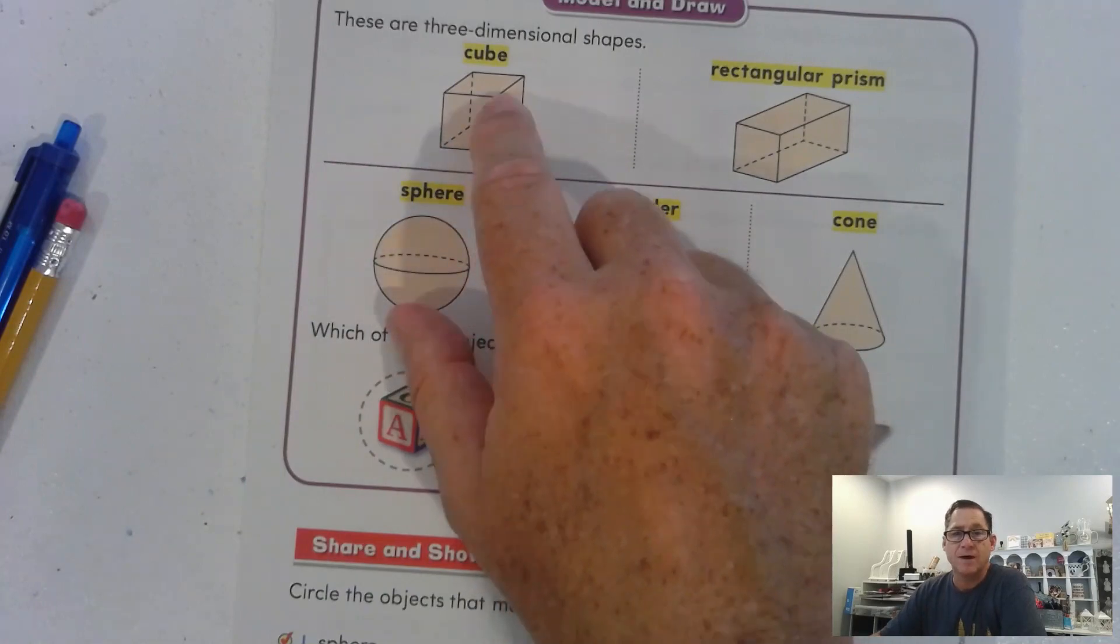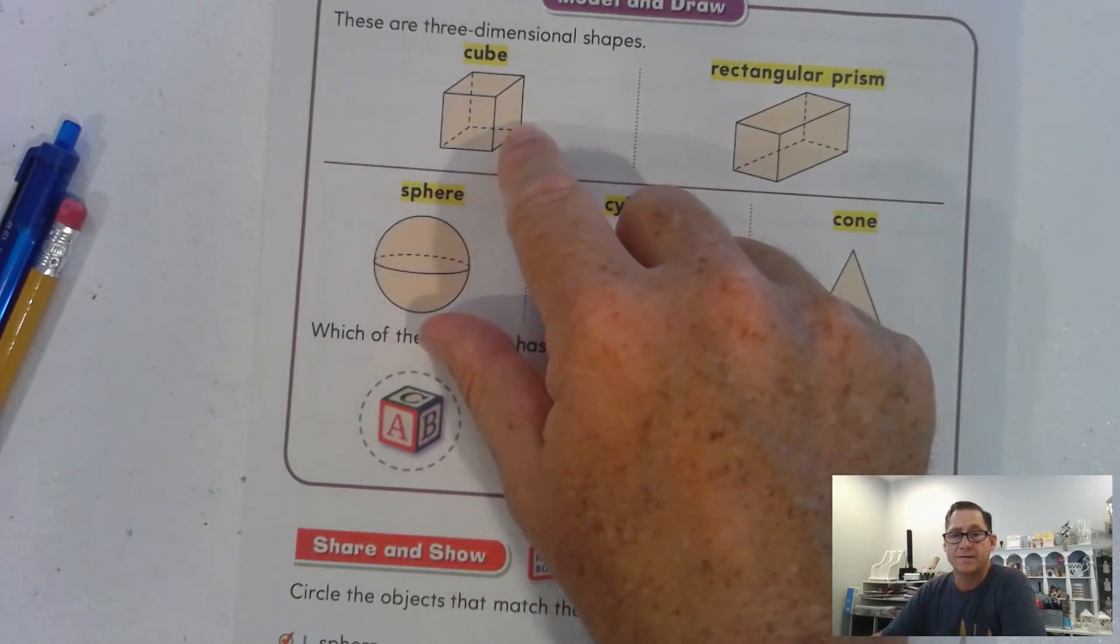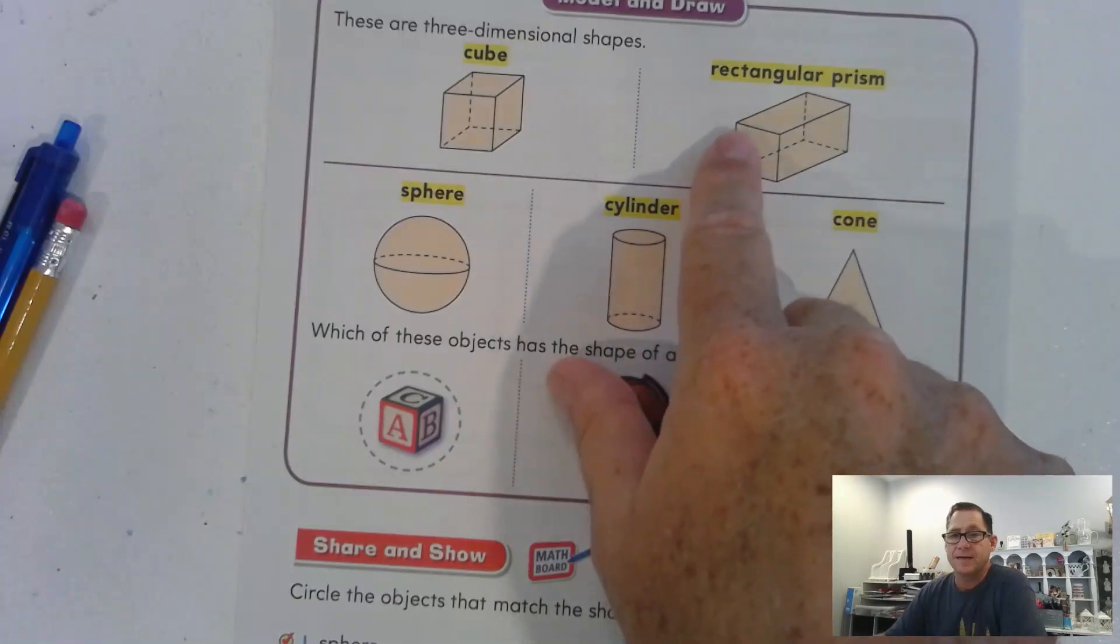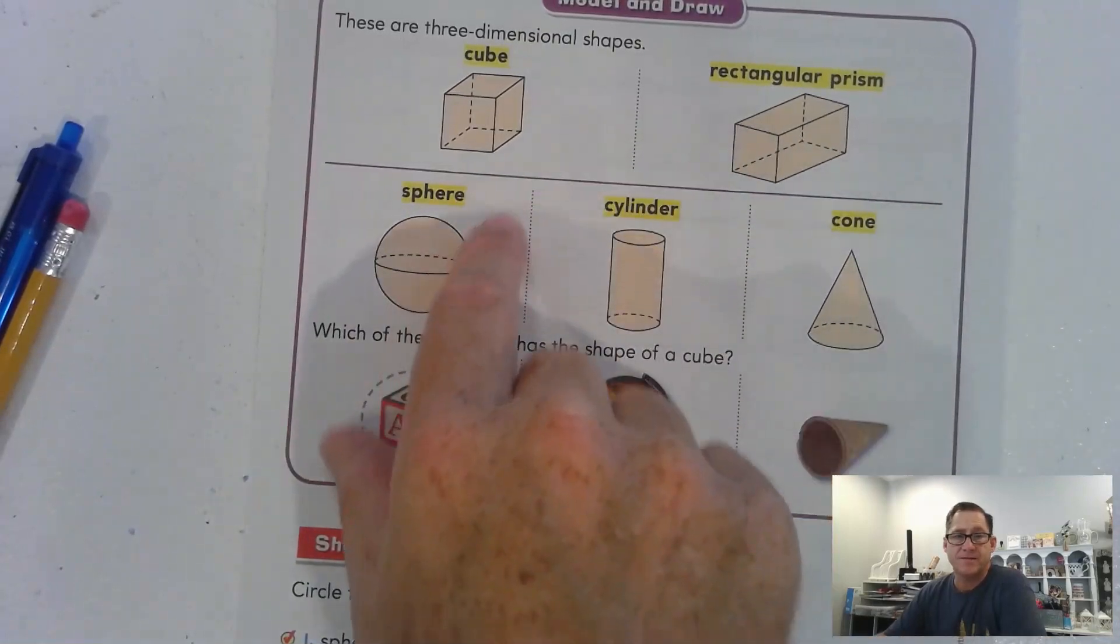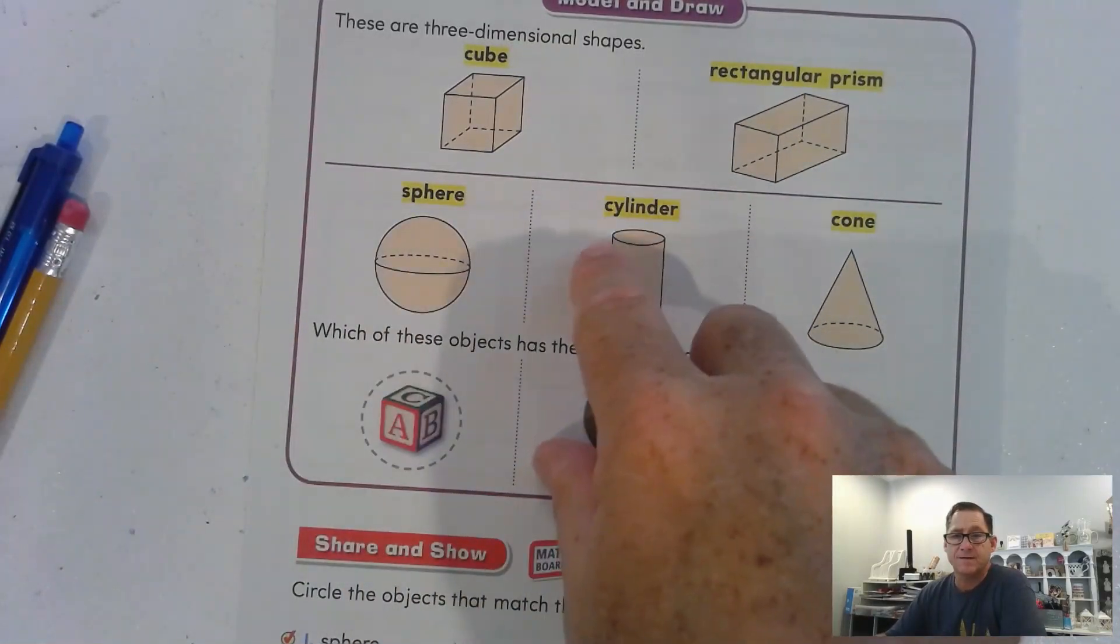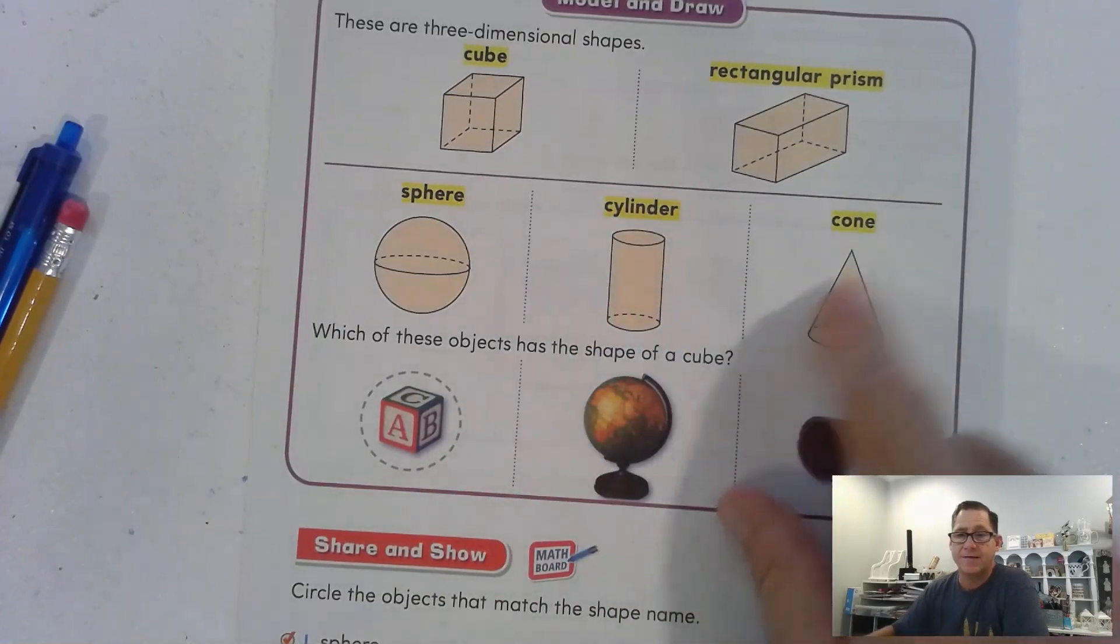So height, length, and width. Same thing here with the rectangular prism, the sphere, the cylinder, and the cone.